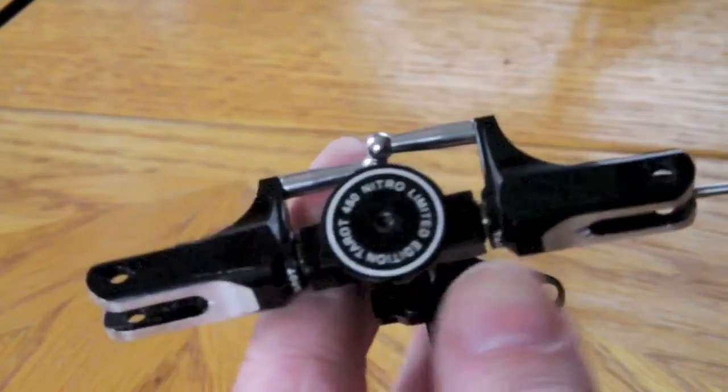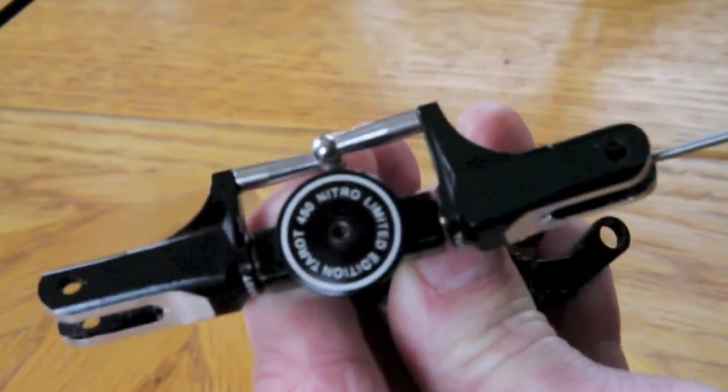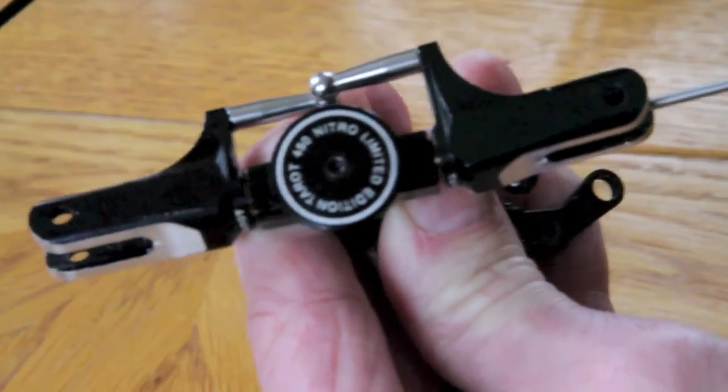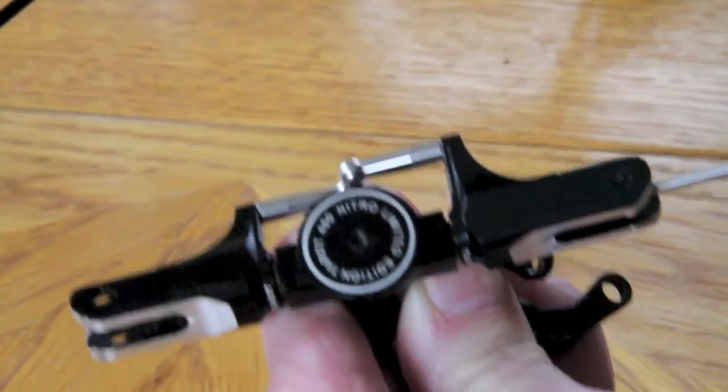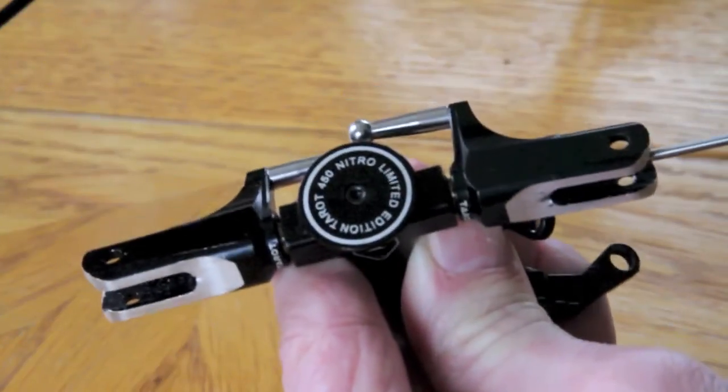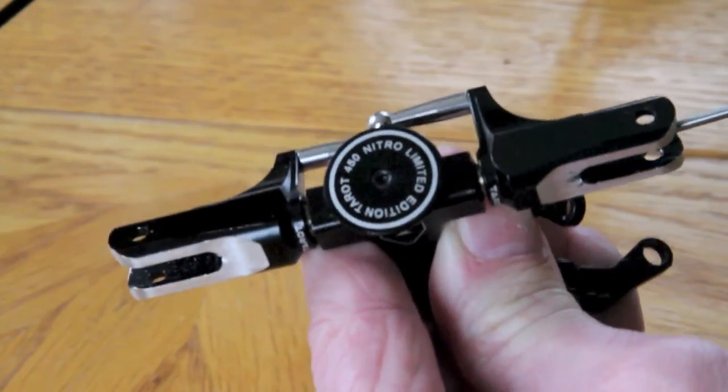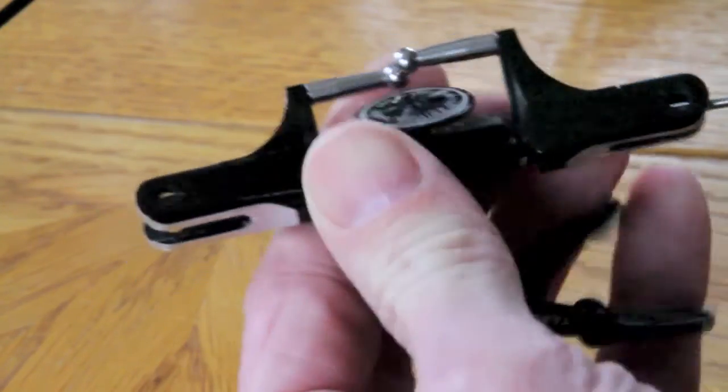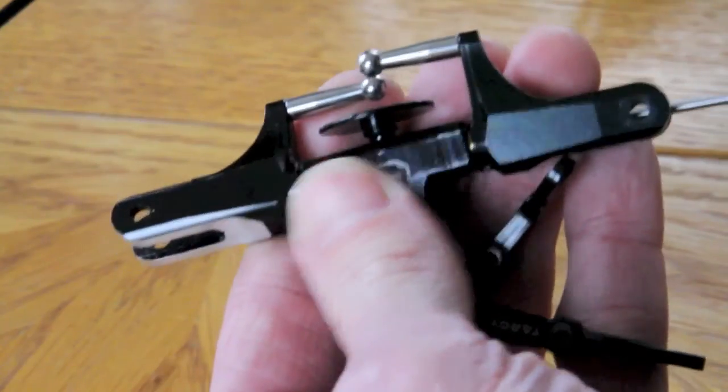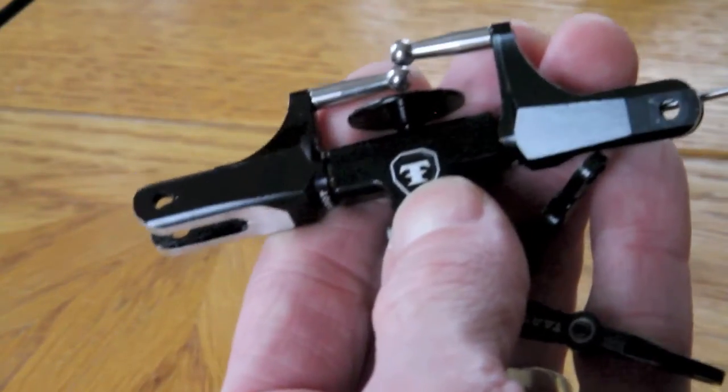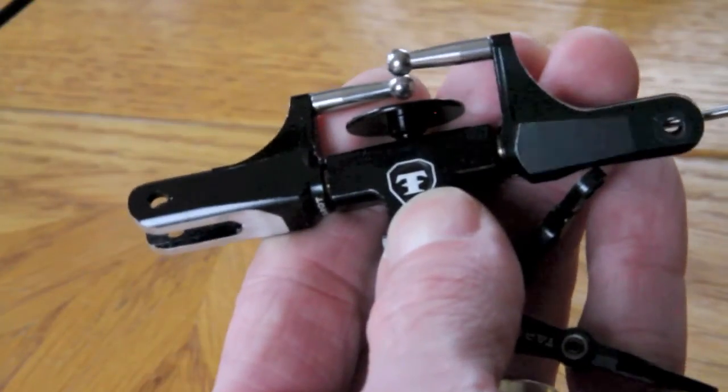I actually read about this over at RC Help forums, where Lee was posting a crash thread on what to look for after a crash. He shared this and I thought it was a really cool way to check it out—made perfect sense. As you can see, it really does indicate that I have a bent feathering shaft.